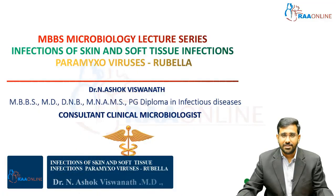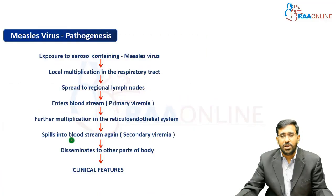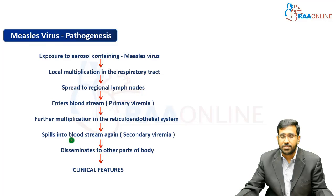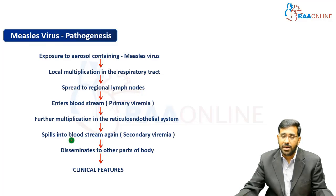Hi everyone, welcome to RAW Online. This is Dr. Asho, consultant clinical microbiologist. The particular route of entry is going to be the aerosol. When someone sneezes or coughs, they produce respiratory droplet nuclei or aerosol which gets contaminated with the measles virus, and following inhalation, we inhale this aerosol or droplet contaminated with this virus.